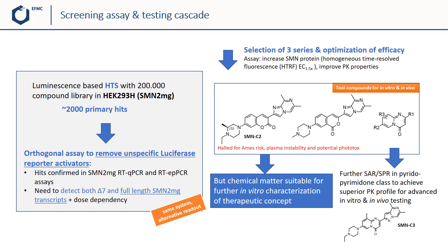In this case, the orthogonal assay looked for protein expression by PCR method. Out of that, the research team selected three series for initial MedChem optimization, using a homogeneous time-resolved fluorescence assay to measure the increase of SMN protein in cells. The team also improved the PK properties of certain examples, resulting in several tool compounds suitable for further in vitro characterization of the therapeutic concept. It was also possible to generate an advanced tool compound named SMNC3, with properties suitable for in vivo studies, giving rise to more experiments and safety evaluations as mentioned in the main webinar.